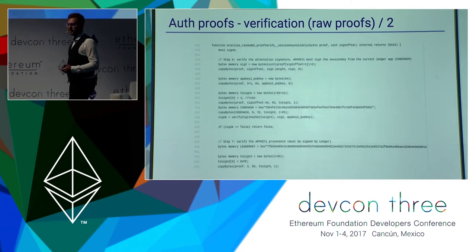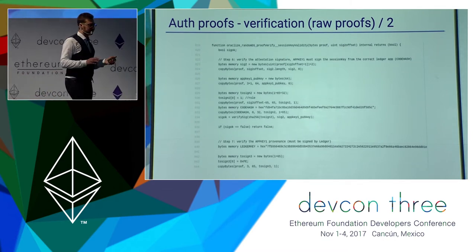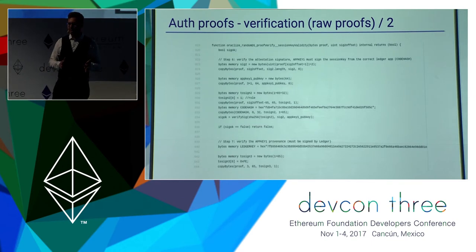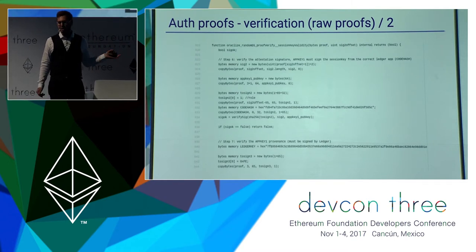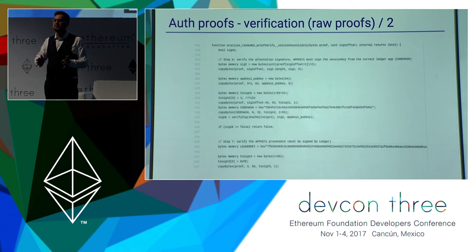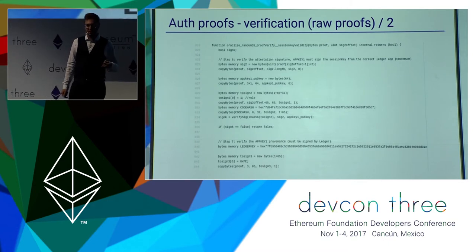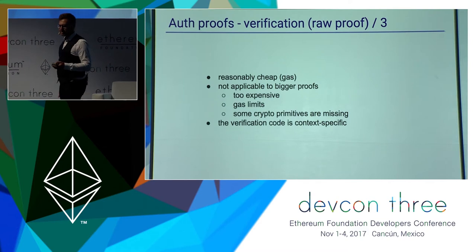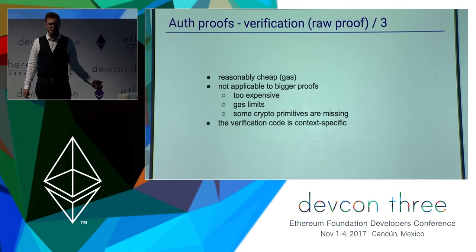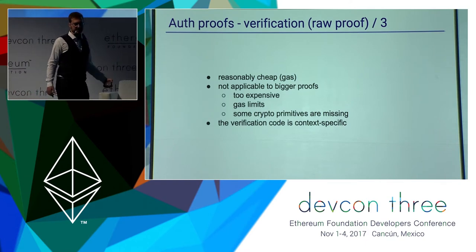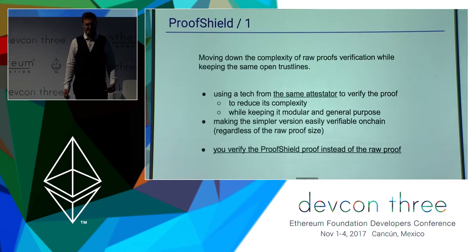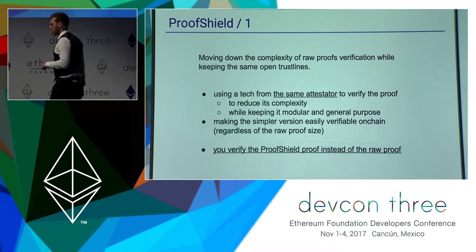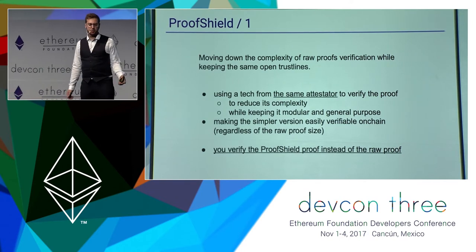For the Ledger Proof, verification is even more complicated, because we are checking that the trusted computing device is really executing the correct code we expect. The code includes, for example, a code hash — the hash of the code being executed — which being open source you can verify yourself off-chain once. There is also the public key of Ledger, which is the one signing the attestation claim. Both the native proof and Ledger Proof are already working on-chain at a quite reasonable cost — around 50,000 to 60,000 gas. But for bigger proofs with bigger messages, it may not be possible to do on-chain verification, so we need to think of something different — and this is what the Proof Shield is.